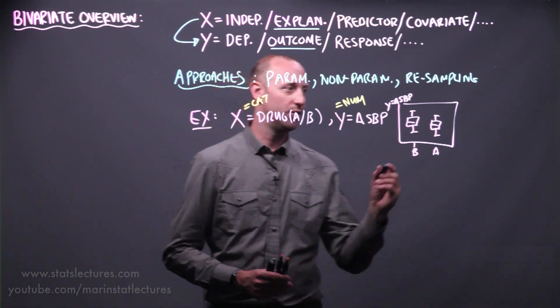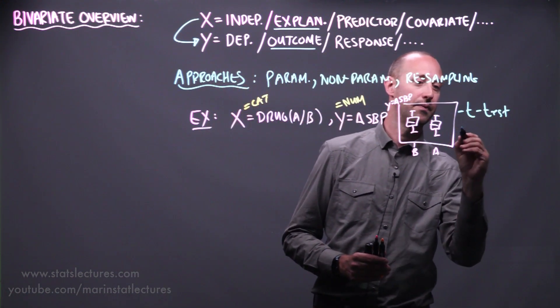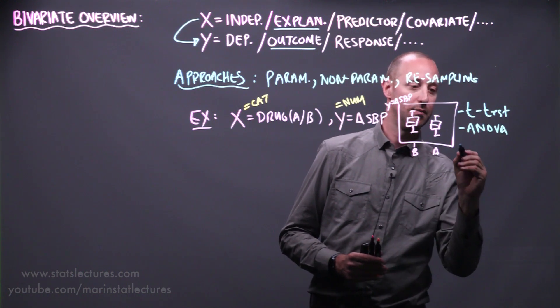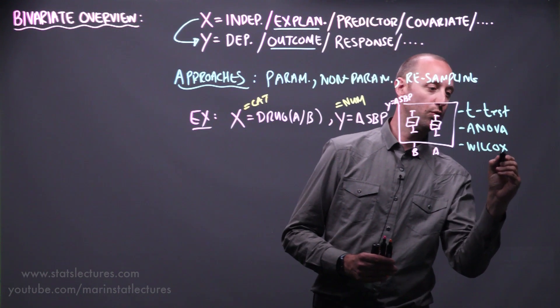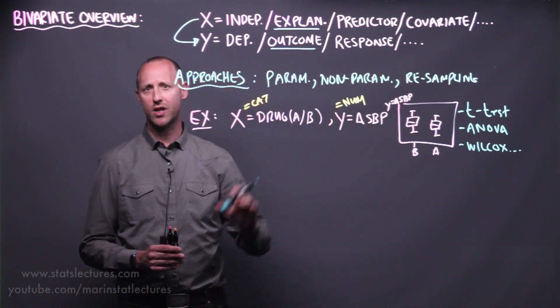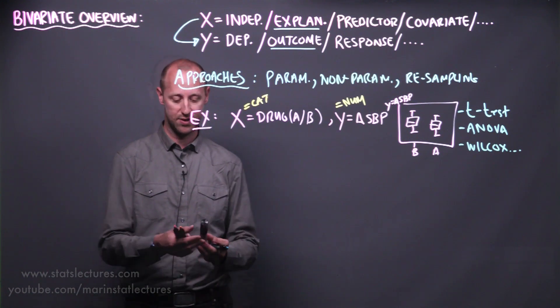Some of the ones that we'll look at are things like the two-sample t-test, one-way analysis of variance, we'll look at the Wilcoxon test, the signed rank and the rank sum test. So we'll look at all those in depth as we progress through other videos.